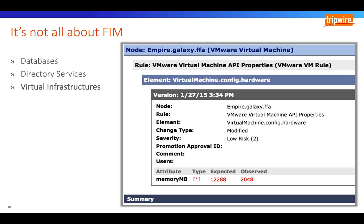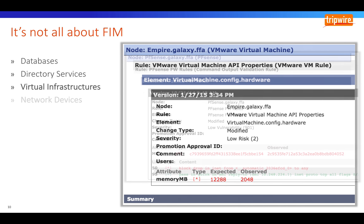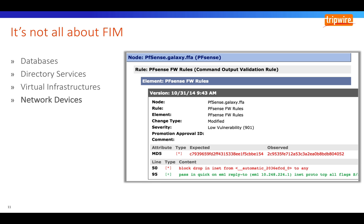Virtual infrastructures is another area that can be monitored for changes — for example, monitoring if a new VM is created, modified, or deleted. The guest virtual machines are covered by file integrity monitoring of course. And finally, but by no means least, network devices such as routers, switches, and firewalls. Via a command line interface such as SSH or Telnet, rules can be run to pull back specific configurations such as access control lists, firewall rules, and configuration information. If changes occur, those changes can be reported on.